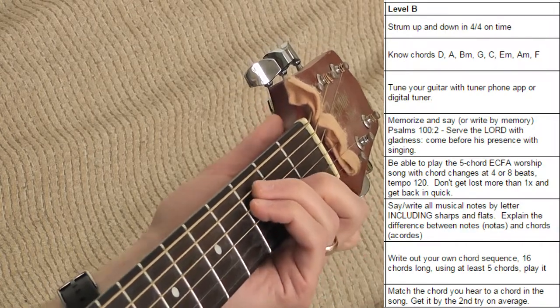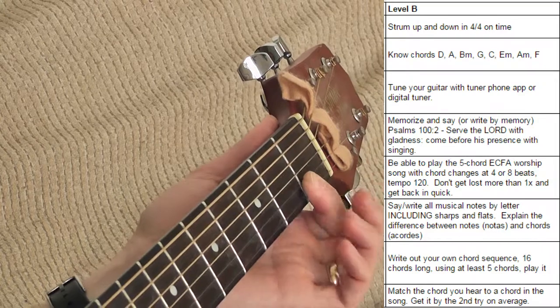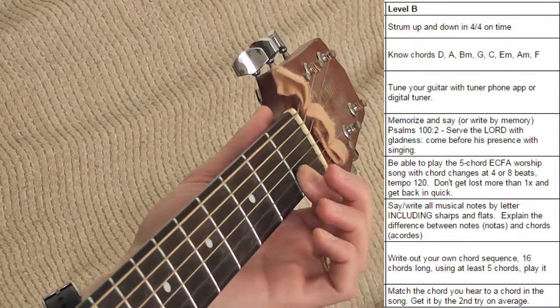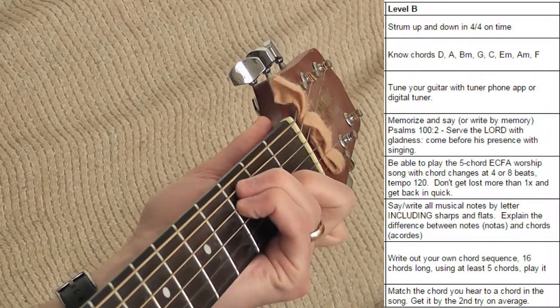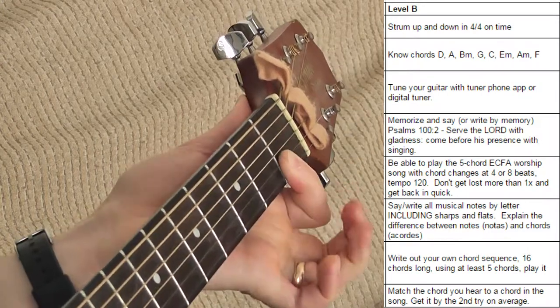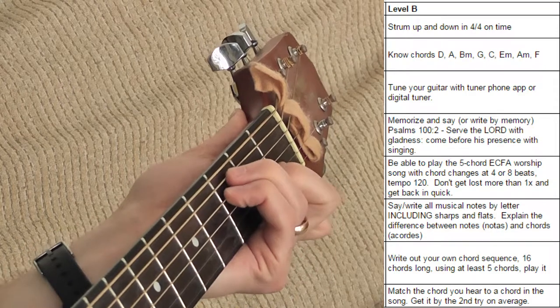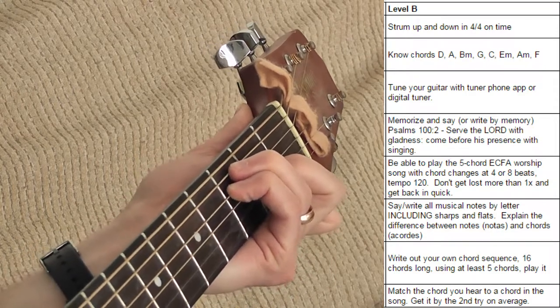And then the last one, which is kind of hard, is called F. And it's hard because you need to press down at least two strings at once. These two. So this motion of pressing down two, you've got all of your fingers going. It's a little bit hard, so work on it.